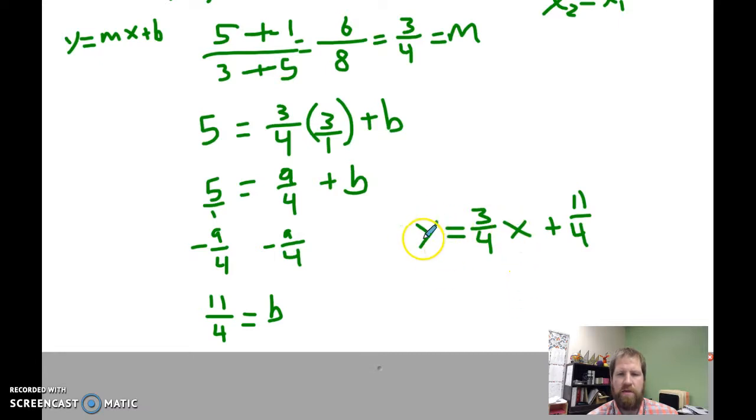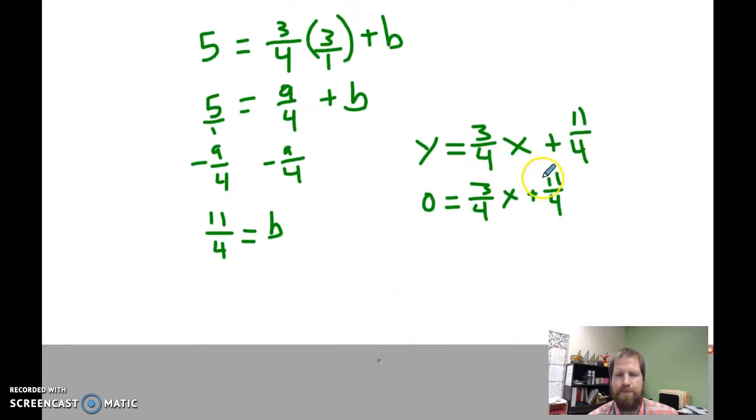And now I'm going to solve this to find my x-intercept, so I set my y to 0. 0 equals 3 fourths x plus 11 fourths. Subtract 11 fourths, subtract 11 fourths, and I get negative 11 fourths is equal to 3 fourths x.